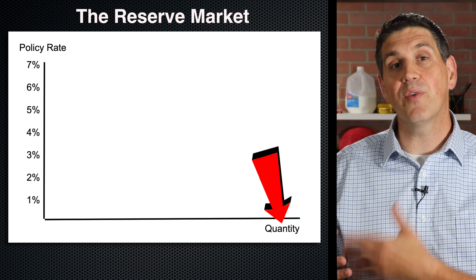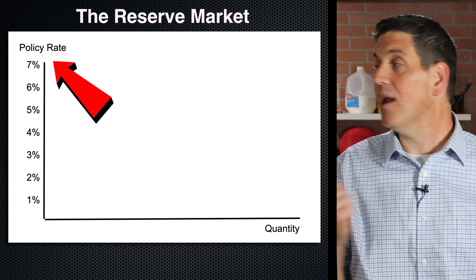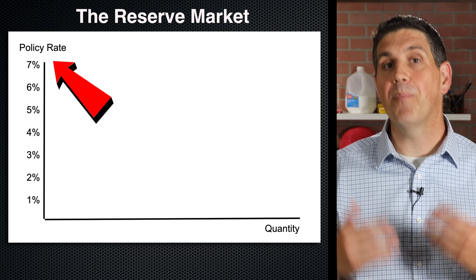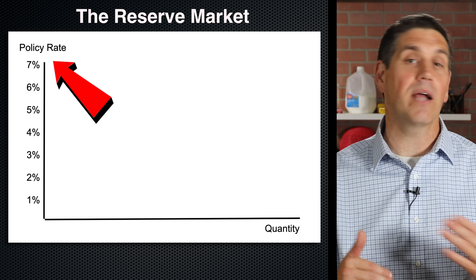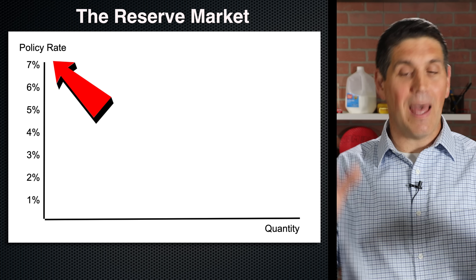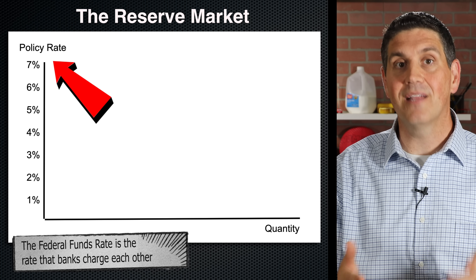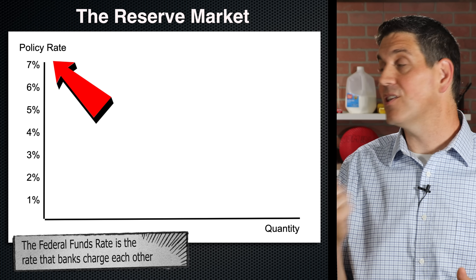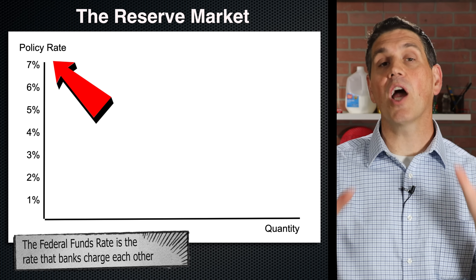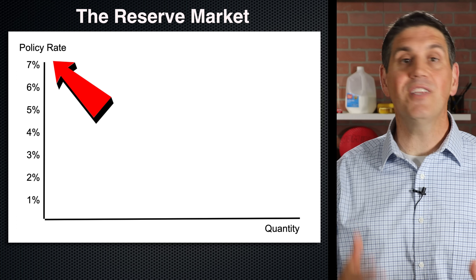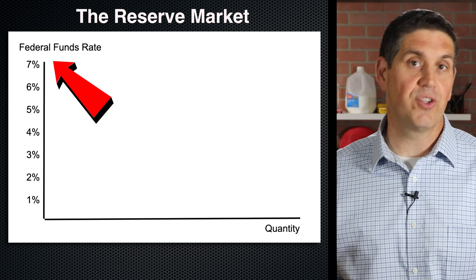Down here we have the quantity of reserves that are deposited with the central bank, and up here we have the policy rate — the rate that the central bank looks at when it's conducting monetary policy. In the United States, that policy rate or target rate is the federal funds rate — the rate that banks charge each other for overnight loans. So since we're talking about the United States and the Federal Reserve, let's change this from policy rate to the federal funds rate.